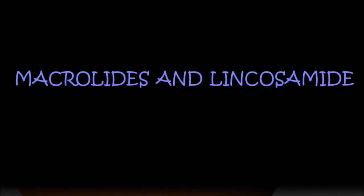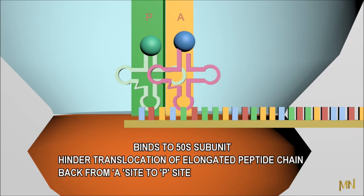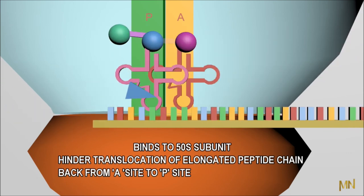Finally, macrolides and lincosamides bind to 50S subunits hinders translocation of elongated peptide chain back from A site to P site.